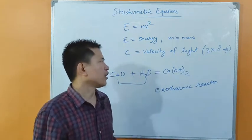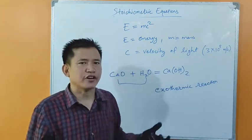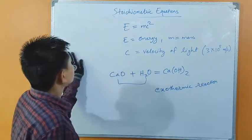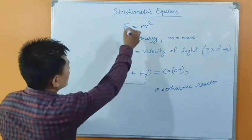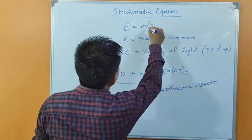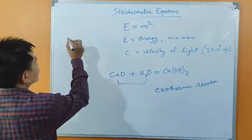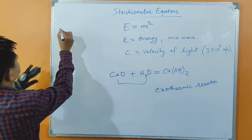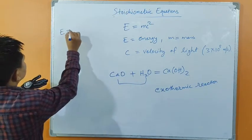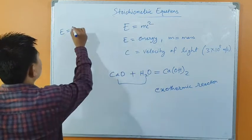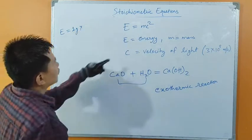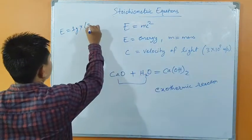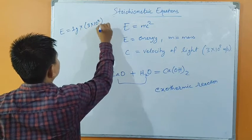Generally we do not consider the amount of mass lost during chemical reaction. Here we have E = mc², and C is the velocity of light. Let us assume mass of the substance is 1 gram. So E = 1 gram × (3 × 10⁸)². When we square this, 3 squared is 9 and 10⁸ squared is 10¹⁶, giving us 9 × 10¹⁶ ERG of energy.